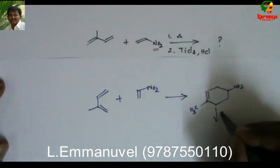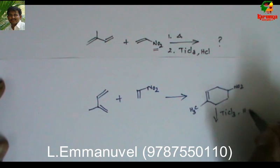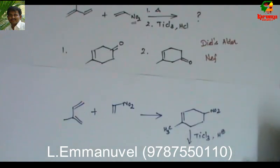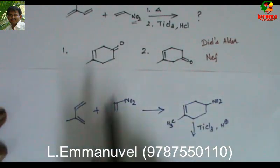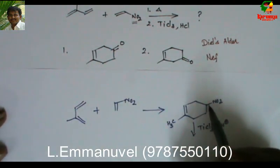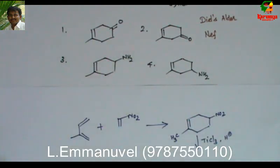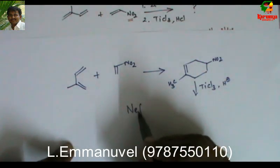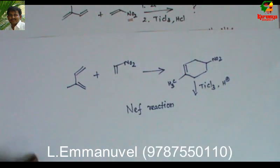When I react this diene with nitroethene, I get the 1,4 addition product. Further, when I treat this with titanium trichloride and H+, what will happen? From the given options, in the first and second, the NO2 has been removed and C=O has been introduced. In order to solve this, you should know the named reaction called the Nef reaction.